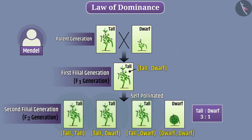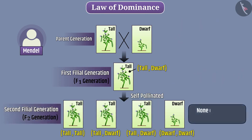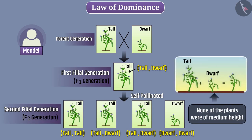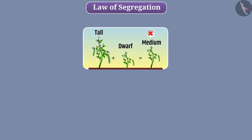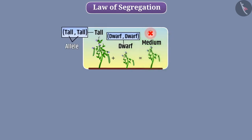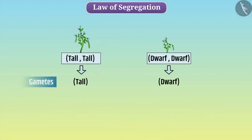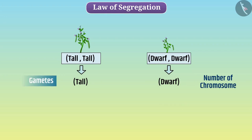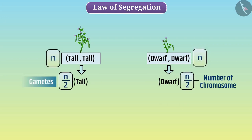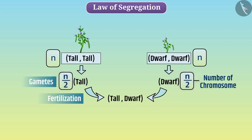Both tall and dwarf plants appeared in the F2 generation, and none of the plants were of medium height — a mixture of long and dwarf traits did not appear. On the basis of this understanding, Mendel introduced the law of segregation, according to which alleles of a trait do not mix with each other — the alleles of a trait remain pure in the pair. During the formation of gametes, alleles get separated, so each gamete gets only one of the two alleles in pure form. In this way, the number of chromosomes in gametes is half that of other cells. At fertilization, the alleles of the male gametes pair again and the number of chromosomes becomes normal.